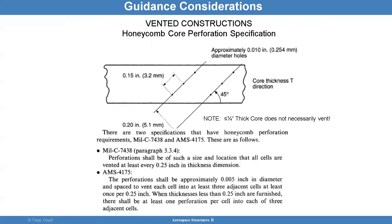For vented constructions, honeycomb core perforations can be specified using MIL-C-7438 and MS-4175, which talk about the kinds of perforations you want to have — size, location, and how close adjacent perforations can be to each other.